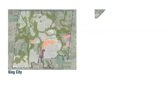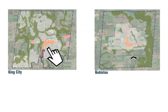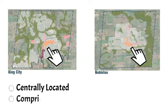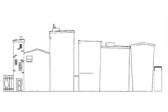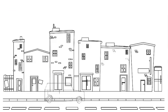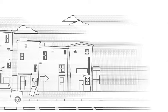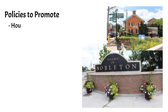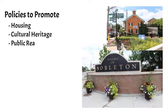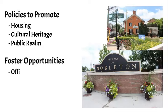The lands within the Doctor's Lane and Old King Road neighborhood plan areas have been selected as they are centrally located within each village and comprise parts of the village core. These lands are intended to accommodate future residential growth and economic development. The neighborhood plans will provide policies to promote diverse forms of housing, the preservation of cultural heritage resources, enhancement of the public realm, and policies that foster opportunities for office, commercial, and mixed-use developments.